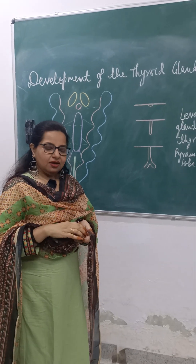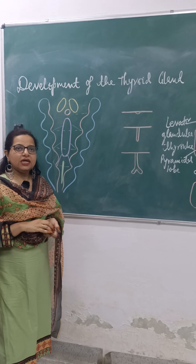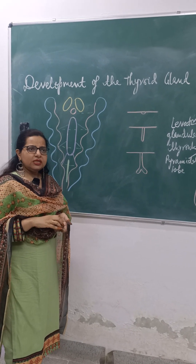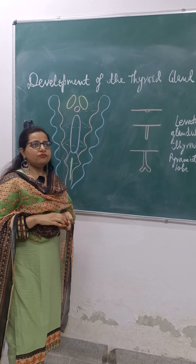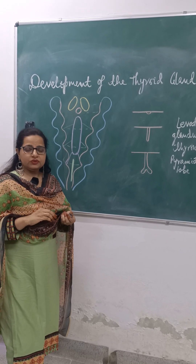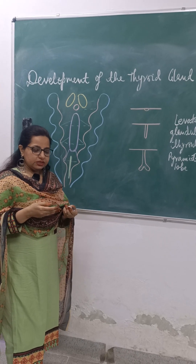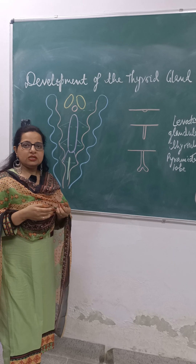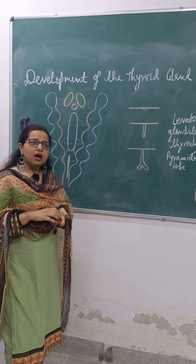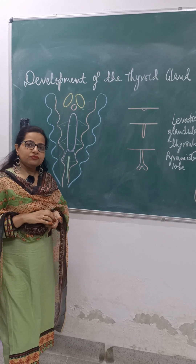Good morning everyone. We have talked about the development and fate of endodermal pouches. In those endodermal pouches we have discussed the third and fourth pouch derivatives — how they are forming the parathyroids along with the C cells of the thyroid gland. Now the question arises how the thyroid gland develops, so today we are going to talk about the development of the thyroid gland.